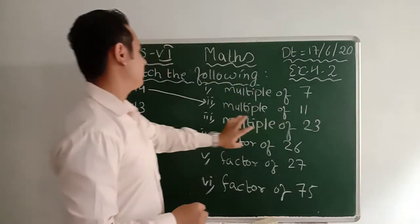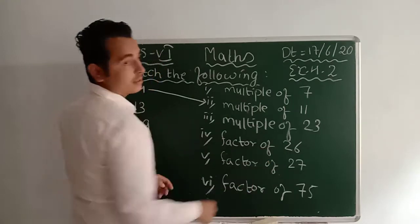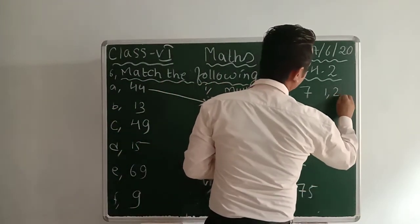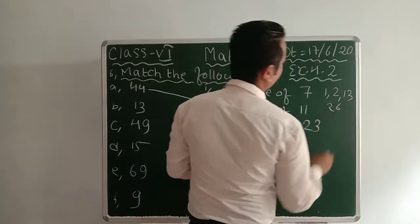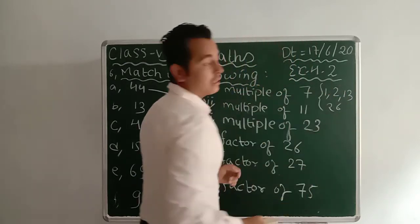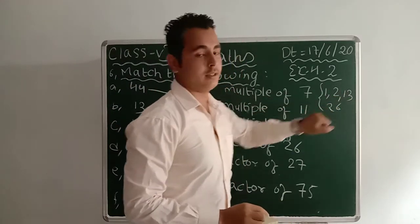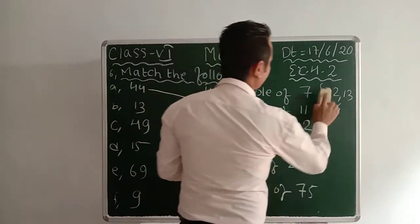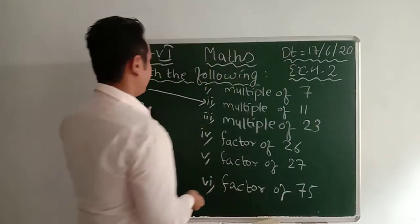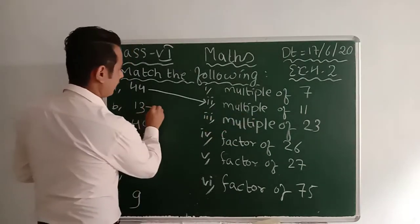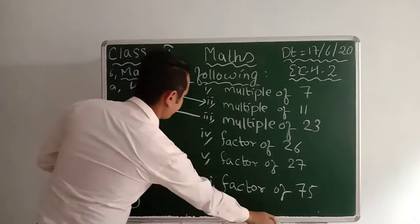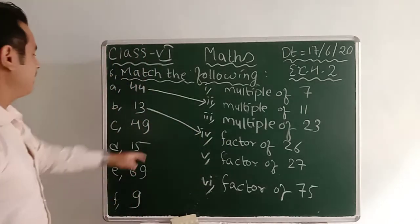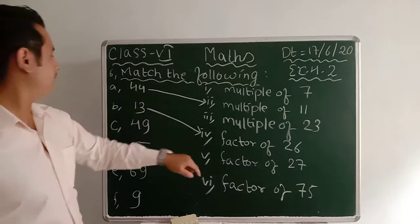Number b is 13. It is not a multiple of 7, not a multiple of 23 either. 13 is a factor of 26 because 26 has four factors: 1, 2, 13, and 26. Therefore 13 matches with 'factor of 26.'